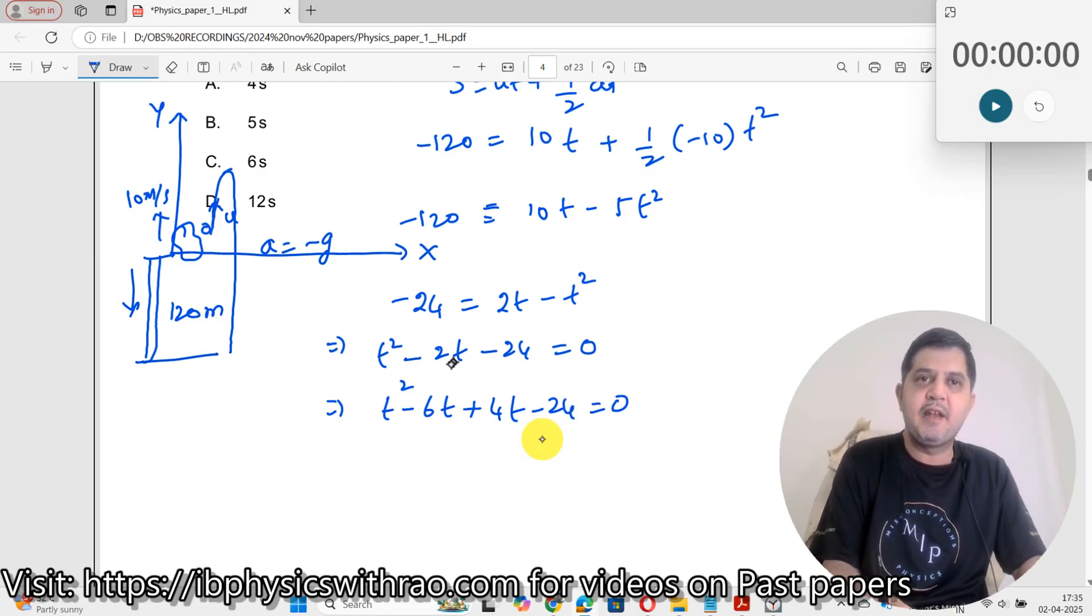See, minus 6t plus 4t will be minus 2t, and 6 into 4 will be minus 24. We have got that one. This implies t minus 6 into t plus 4 equals 0.